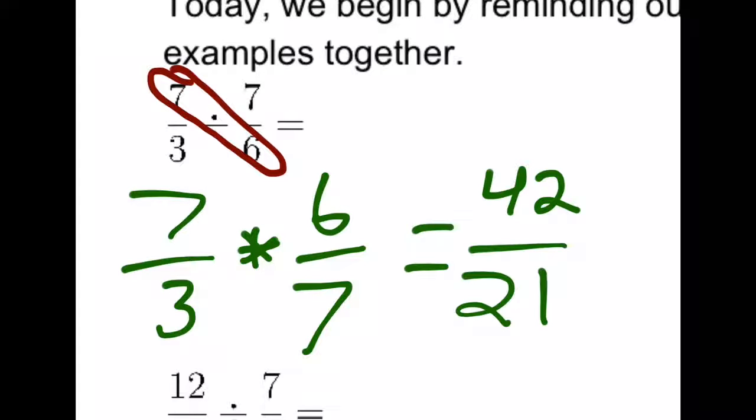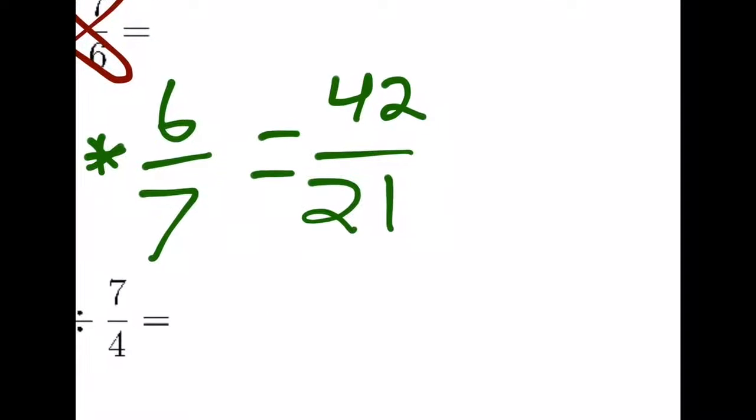This is what's often referred to as cross multiplying. Notice 7 times 6 went across the top and 3 times 7 went across the bottom. To simplify this, we can look for a common factor between the two. It turns out that 21 goes into both of these numbers. So we can divide both by 21 and we get 2 over 1, which is the same thing as 2.